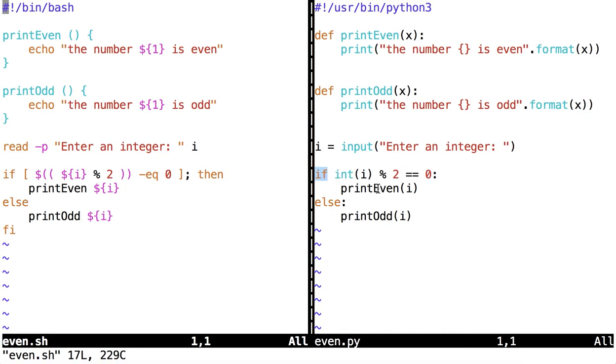If it does, we will call print even, passing i as an argument, and we'll talk about what that means in a second. If it does not, then we will call print odd with i as an argument.